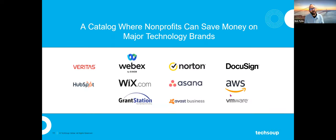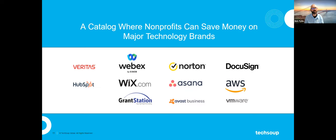Those aren't the only brands — there are dozens more, including DocuSign, Norton, Asana, and AWS. One thing to be aware of: some offers in the TechSoup catalog have limits based on the size of your nonprofit or its mission type. When looking at a product you think your nonprofit should use, always check the eligibility restrictions that may exist for that product.